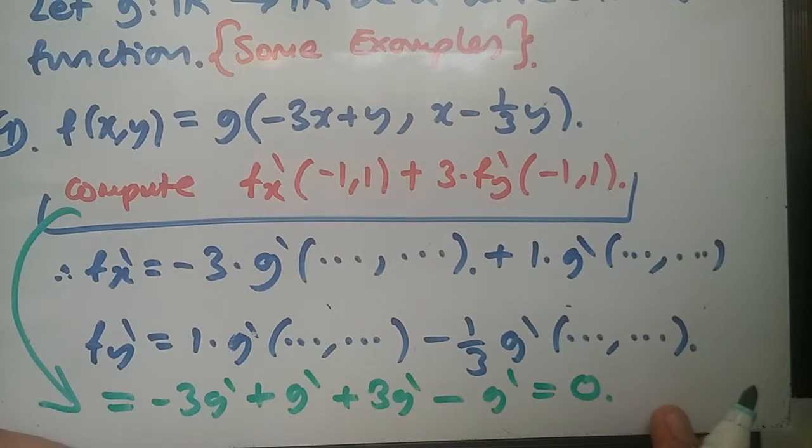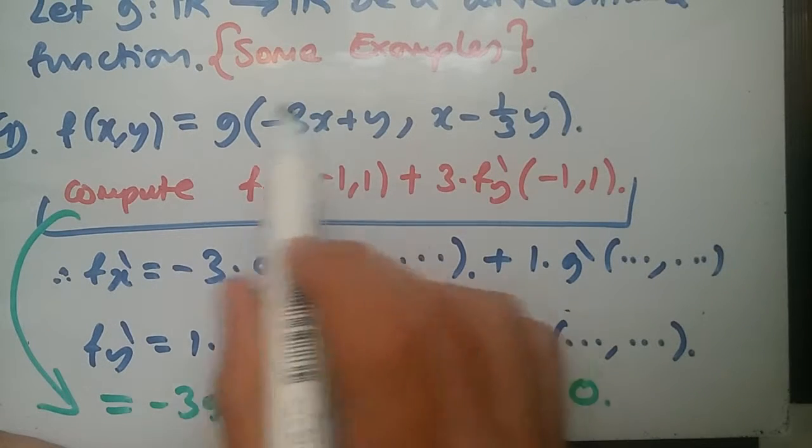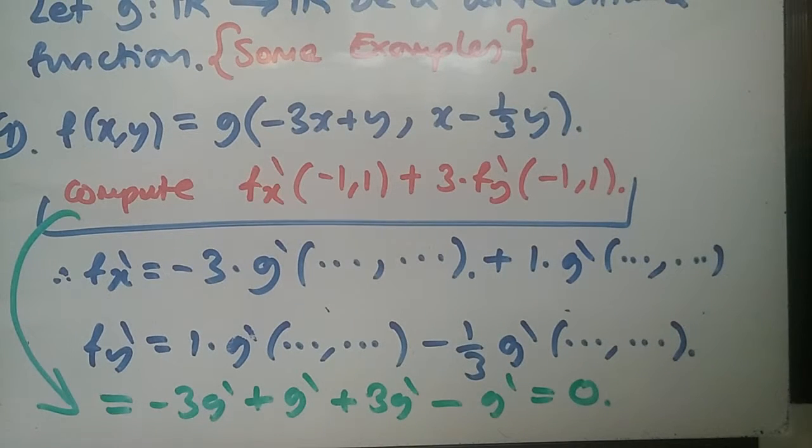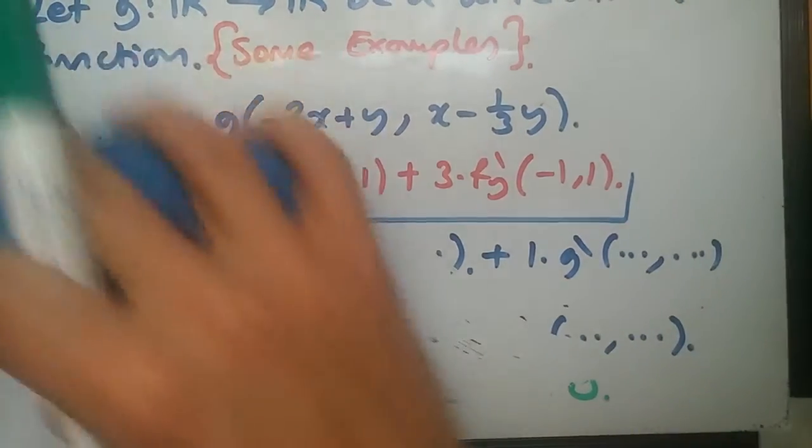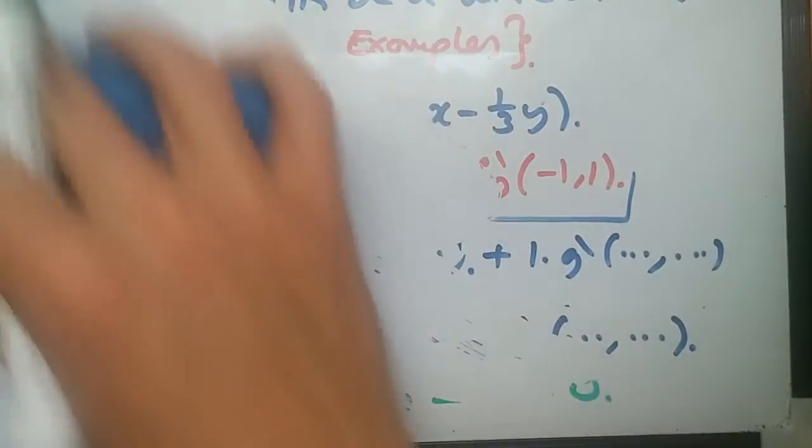So what they want us to do here is to use this function plus three lots of this function. Just by calling the g prime, what would we get? So this function here would equal, following this information, we have -3 g prime plus g prime. Plus now three times this, so three times this would be 3 g prime minus g prime.